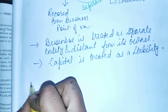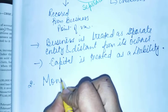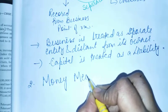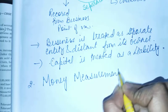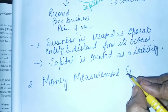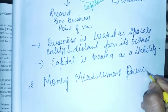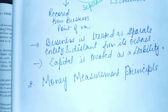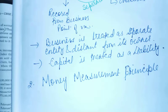अब हम दूसरा concept देखते हैं — उसका नाम है Money Measurement Concept या Principle. This is very simple. Those transactions which are expressed in terms of money are recorded in the books of accounts. वैसे transactions जिसको हम money के respect में express कर पाएं, उसी को हम अपने books of accounts में record करते हैं.